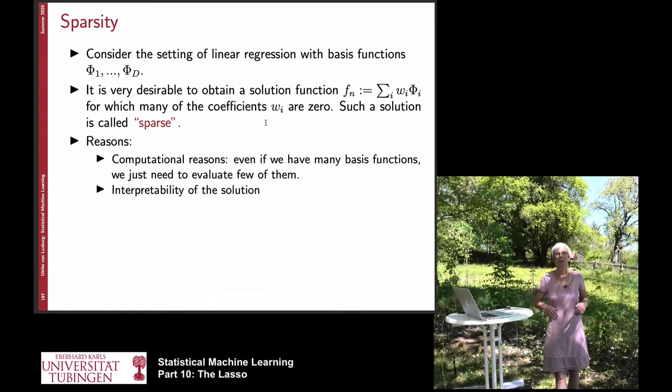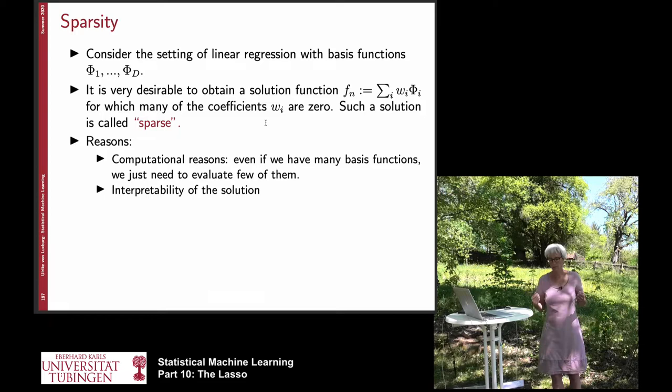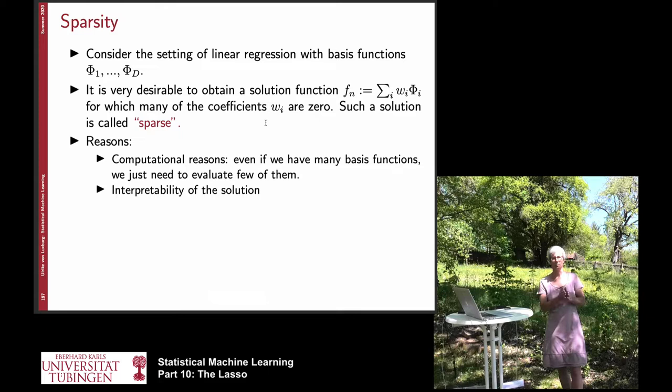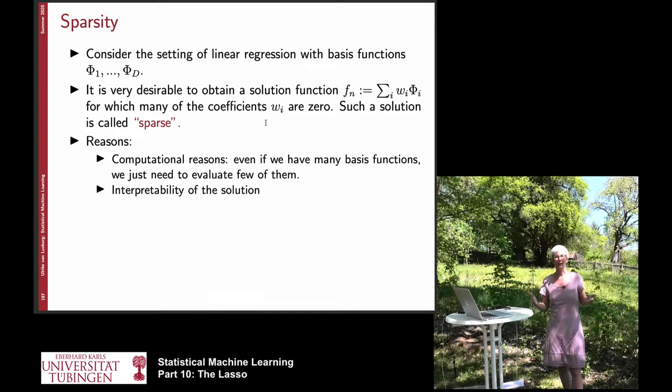The key thing we are after in this particular regularization formalization is that we want to achieve sparsity of our solution. Sparsity means that we have all these many different parameters W1 to WD, but ideally what we would like to achieve is that many of these parameters are zero. Each parameter Wi tells us how important this particular feature Vi of the data is, and ideally we would like many of these parameters to be exactly zero.